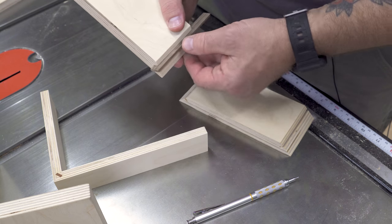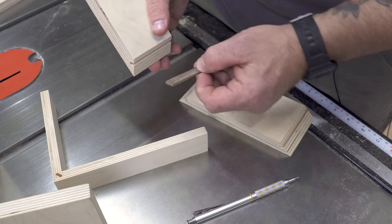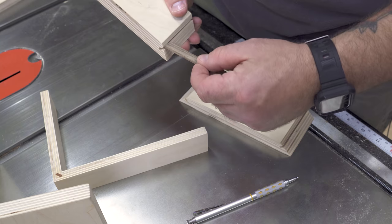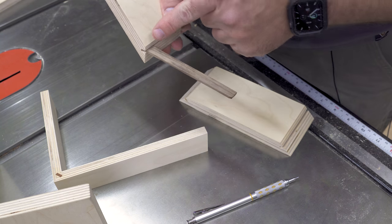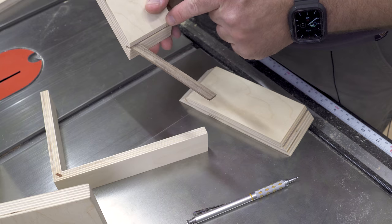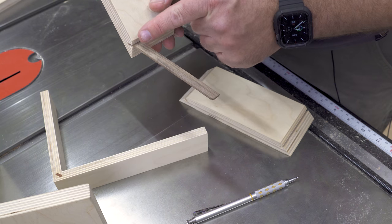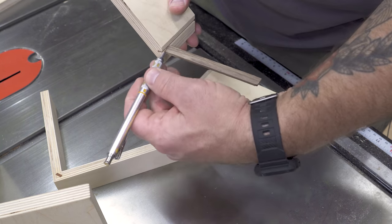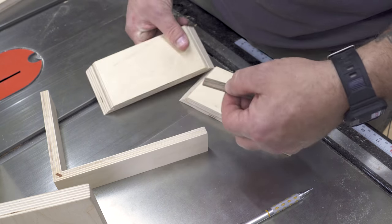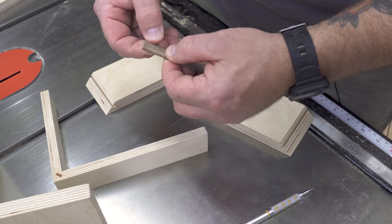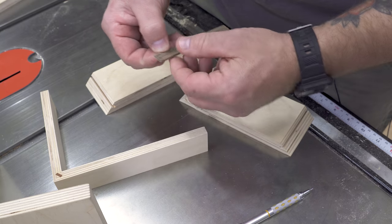If you wanted to get more strength out of this, you would need to make your spline run this direction. You want the length of it still this way, but you want the grain direction running this way. This is a lot harder to break than this. It's just kind of how wood works.